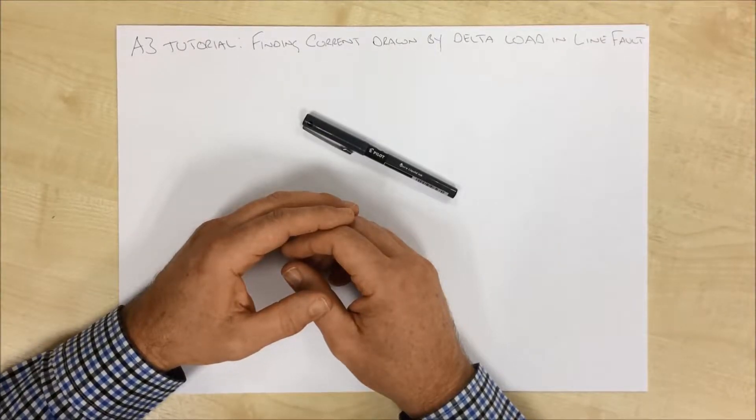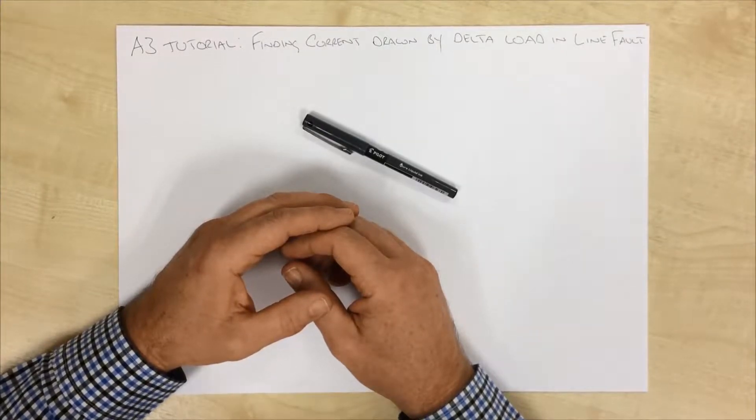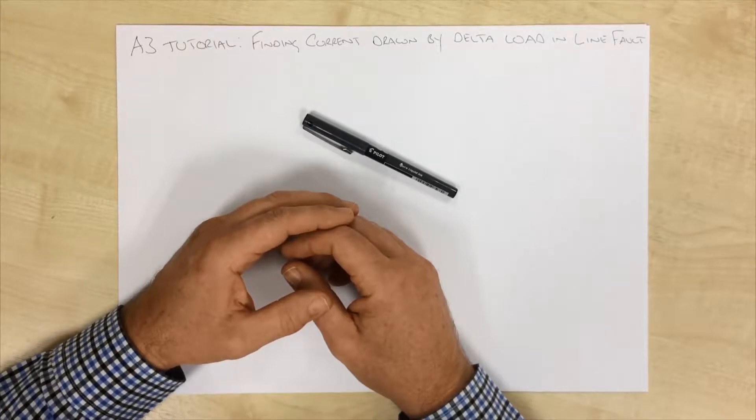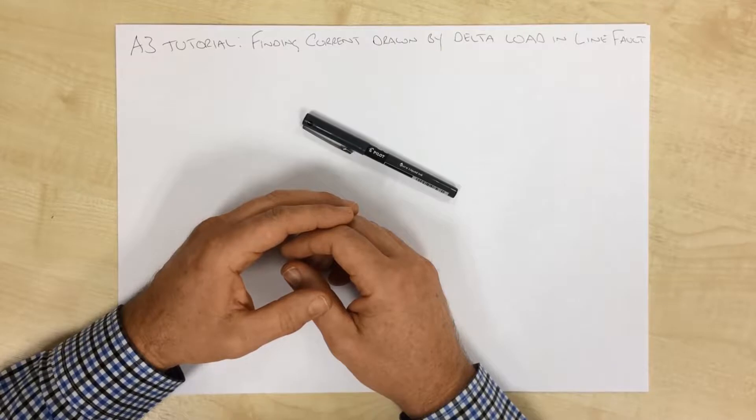Hello and welcome to this A3 tutorial. Today I'm going to go through how we can find the current in a delta load when one of the lines that's feeding that delta load goes faulty.